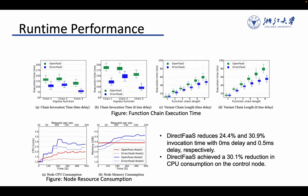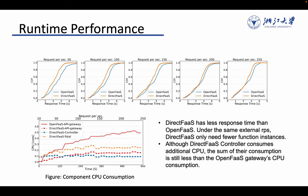In the runtime performance, DirectPass reduces 24.4% and 30.9% invocation time with 0 milliseconds delay and 0.5 milliseconds delay, respectively. It also achieved a 30.1% reduction in CPU consumption. DirectPass has less response time than OpenFaaS, and also consumes less CPU than the OpenFaaS gateway.